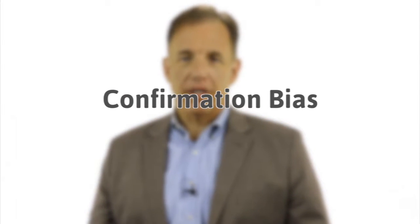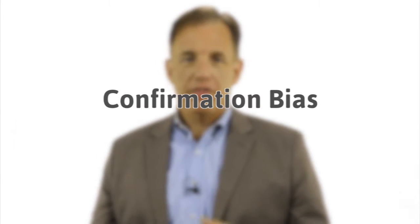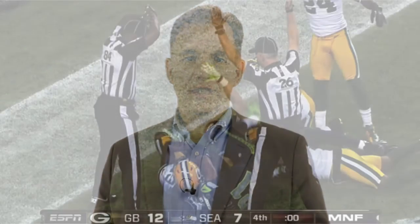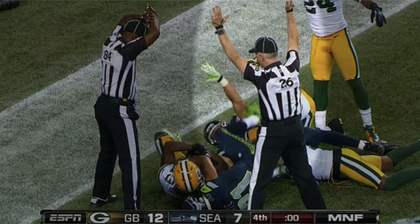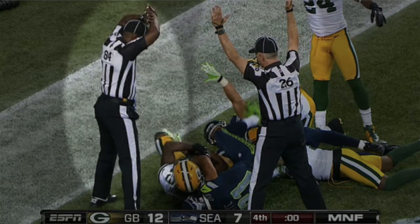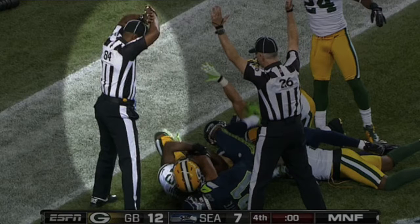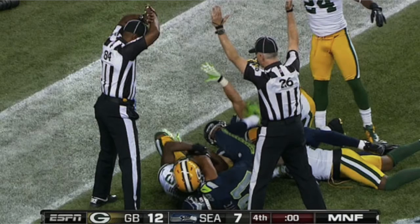The first one is called confirmation bias. If you look at this picture, this is a touchdown during a U.S. football game between the Green Bay Packers and the Seattle Seahawks. One referee is signaling a touchdown and the other is signaling no touchdown. Depending on whether you're a Packers or a Seahawks fan, you are readily going to agree with one referee or the other. The confirmation bias is the idea that we seek out evidence that confirms our point of view and ignore information that doesn't support that point of view.